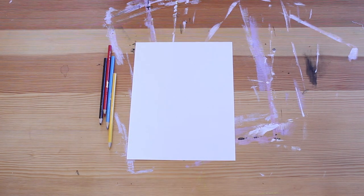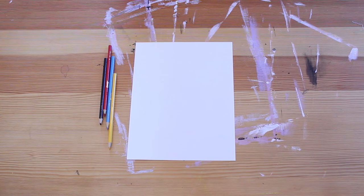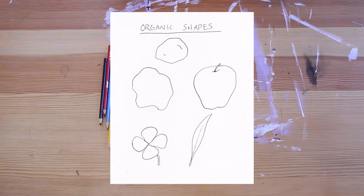I'm going to start off by explaining the difference between the two types of shapes and those two types are organic and inorganic. The biggest difference between the two is that organic shapes are shapes that you would find in nature. They usually have a lot of curved lines,